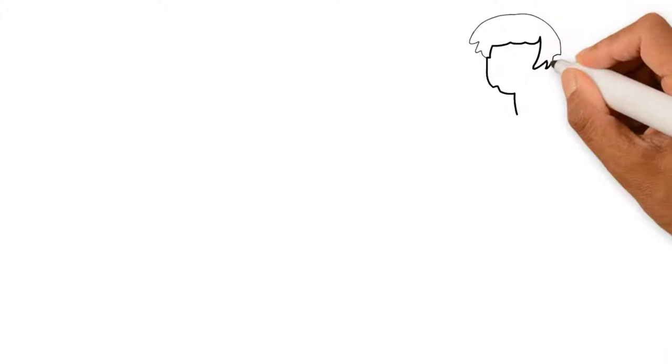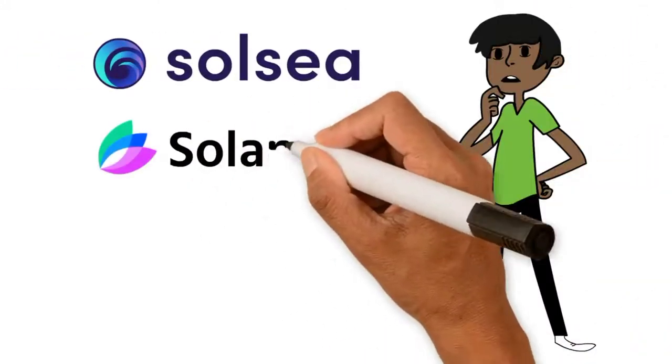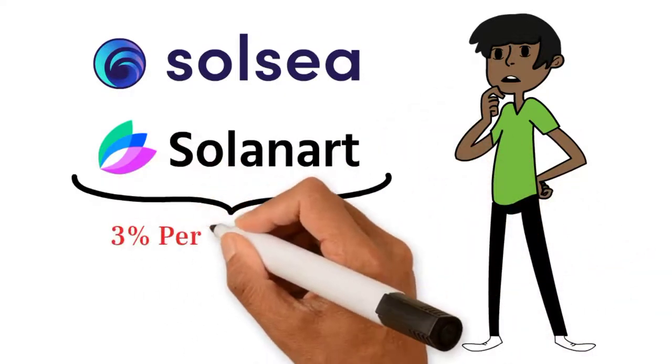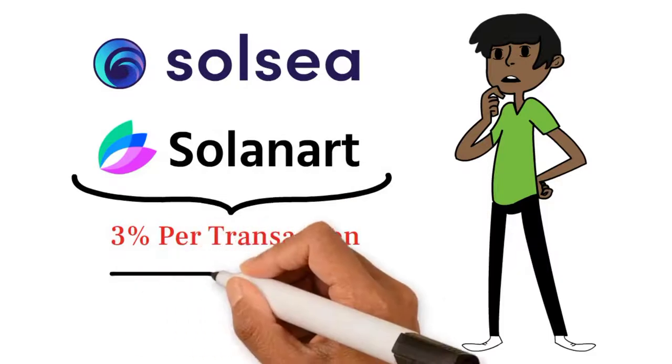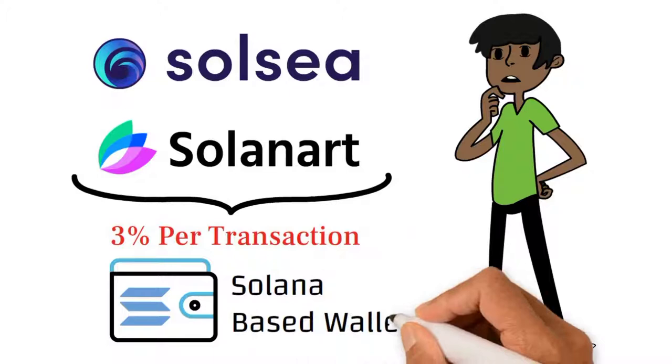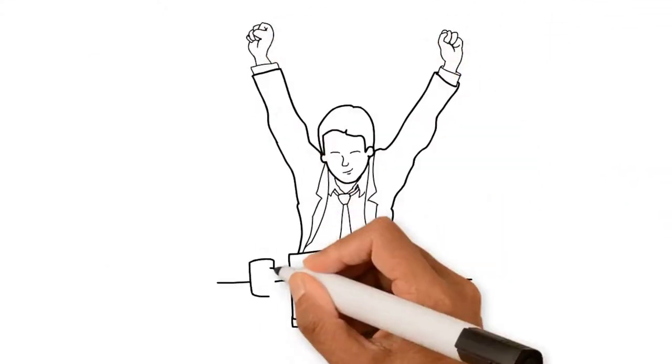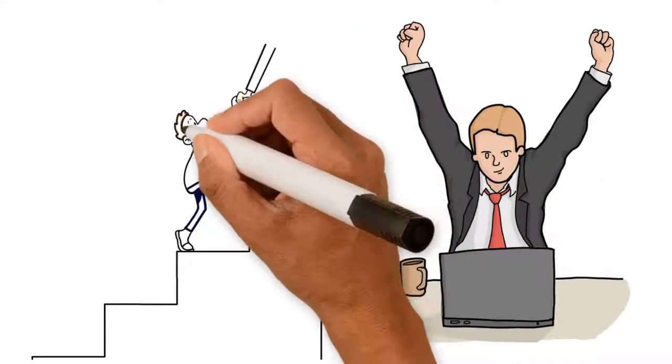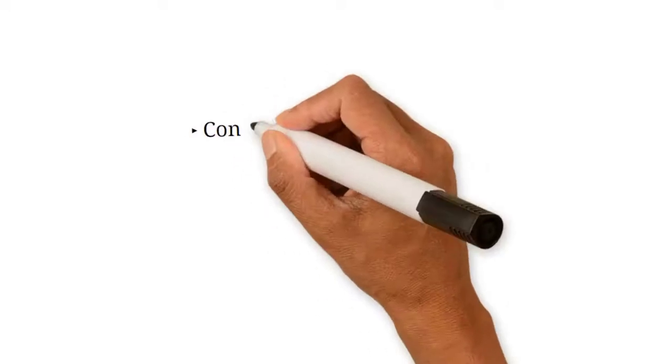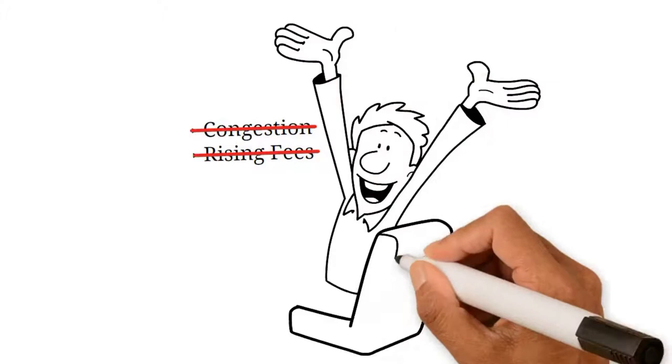But how can you buy Sol NFTs? Well, SolC and Solanart are two marketplaces which deal with the NFTs. They currently charge around 3% per transaction for trading in NFTs, and they both require you to have access to a Solana-based wallet. The good news for people who want to get involved with buying NFTs right now is that Solana is making it a lot easier for anyone to jump in. You can avoid the congestion and rising fees of Ethereum-based platforms and still start developing a decent NFT collection.